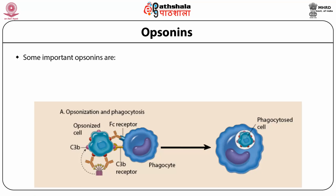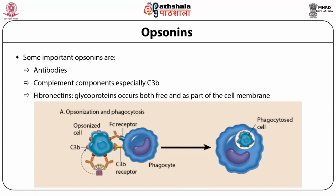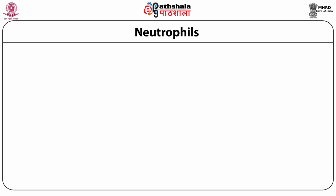Some important opsonins include antibodies, complement components especially C3b, and fibronectins, which are glycoproteins occurring both in free form and as part of the cell membrane. Polymorphonuclear neutrophil granulocytes constitute about 60 to 75 percent of blood WBCs in humans and other carnivores, and 20 to 30 percent in ruminants.